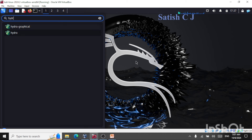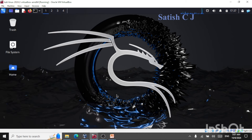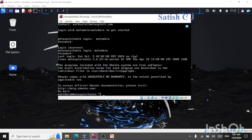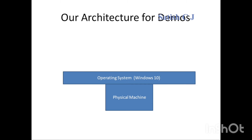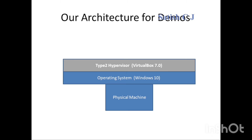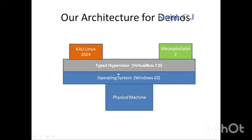We are using Kali Linux as the attacking system and I also have Metasploitable 2 running on VirtualBox. The architecture for this demonstration is: I have my physical machine, on top of that my host operating system Windows 10, and on top of Windows 10 we have VirtualBox 7.0 with two virtual machines — Kali Linux as the attacking system and Metasploitable 2 — placed under the host-only adapter network.